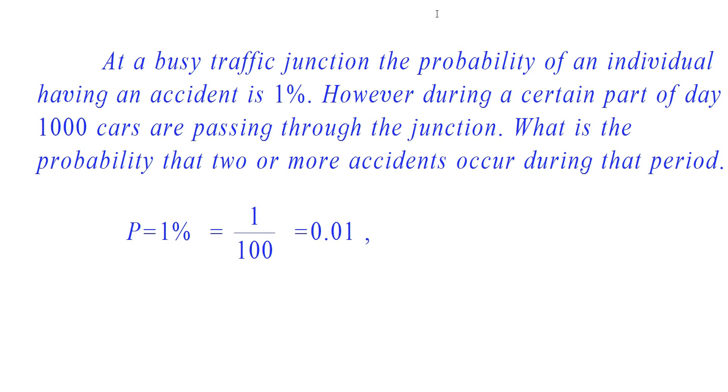It is given that on a particular day, thousand cars happened to pass through that junction. Therefore, we take the parameter n as 1000.